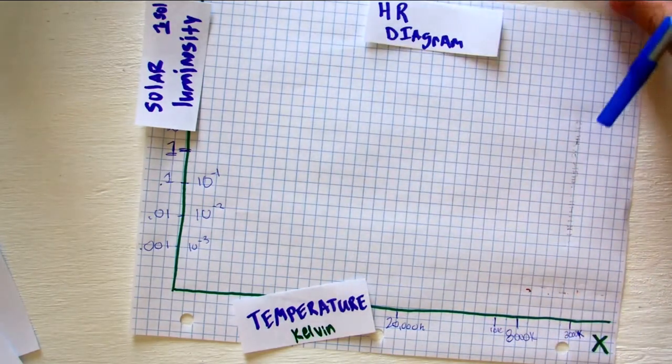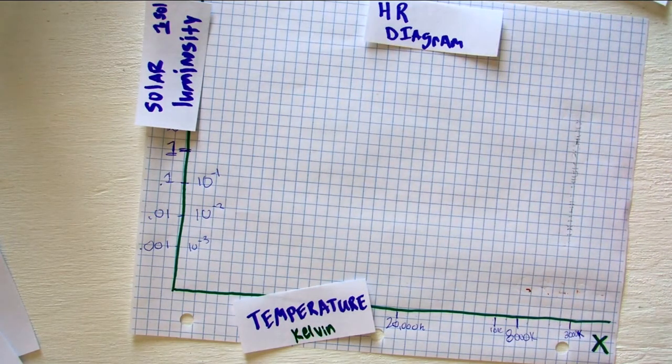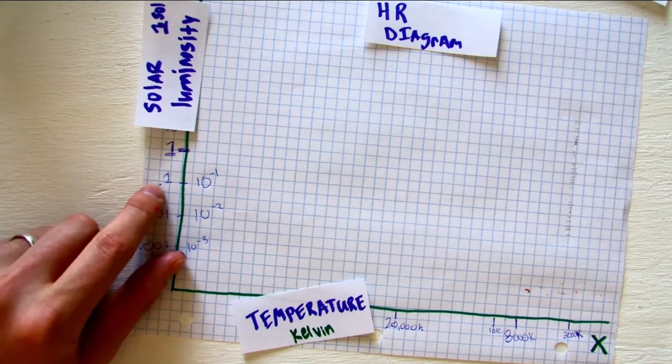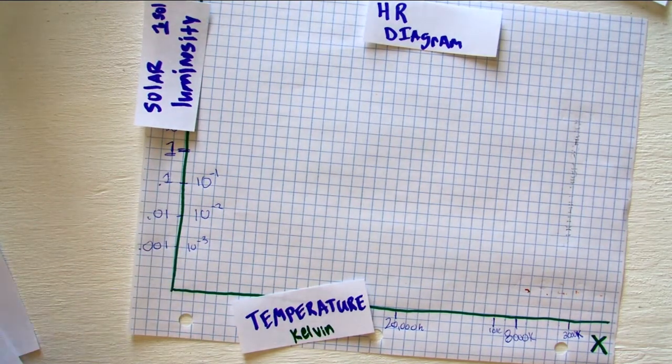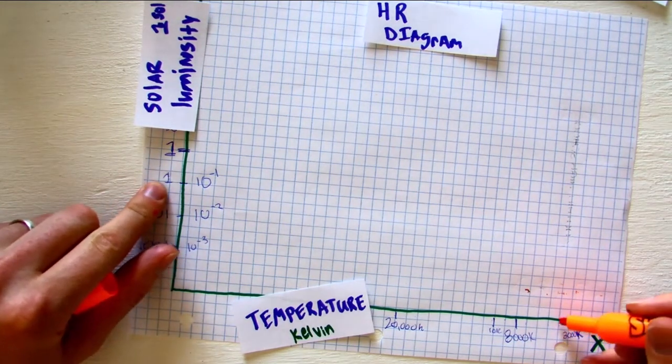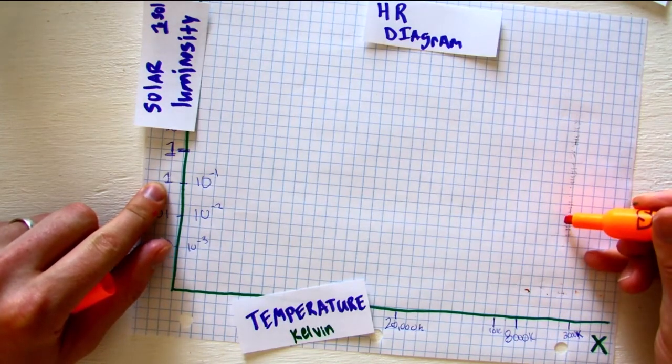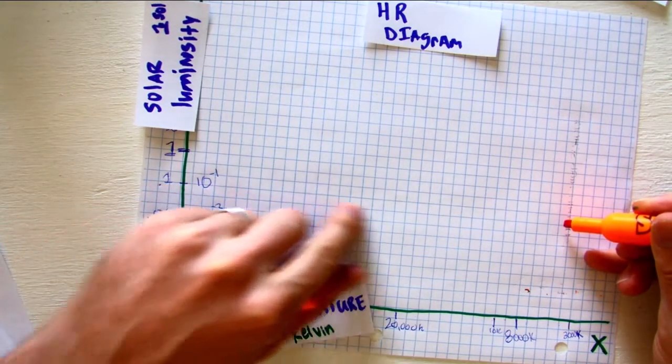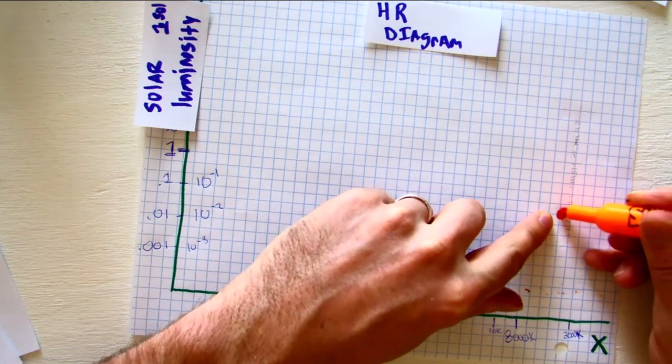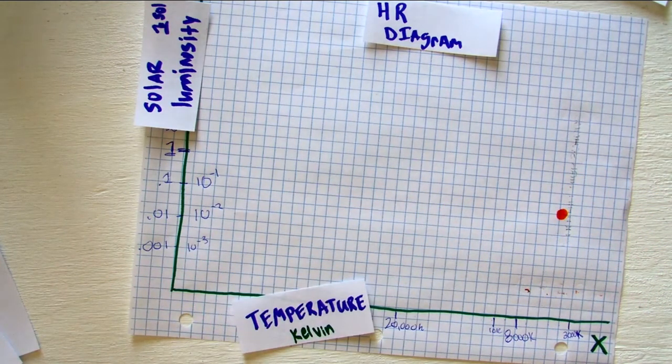I'm going to pick a red dwarf, or maybe an orange dwarf. Let's pick that. So I'm going to pick it as 0.1 solar luminosity, and maybe it's about 4,500 Kelvin. So I go up to 4,500, I bring 0.1 solar luminosity over, and then I plot my little orange dwarf.